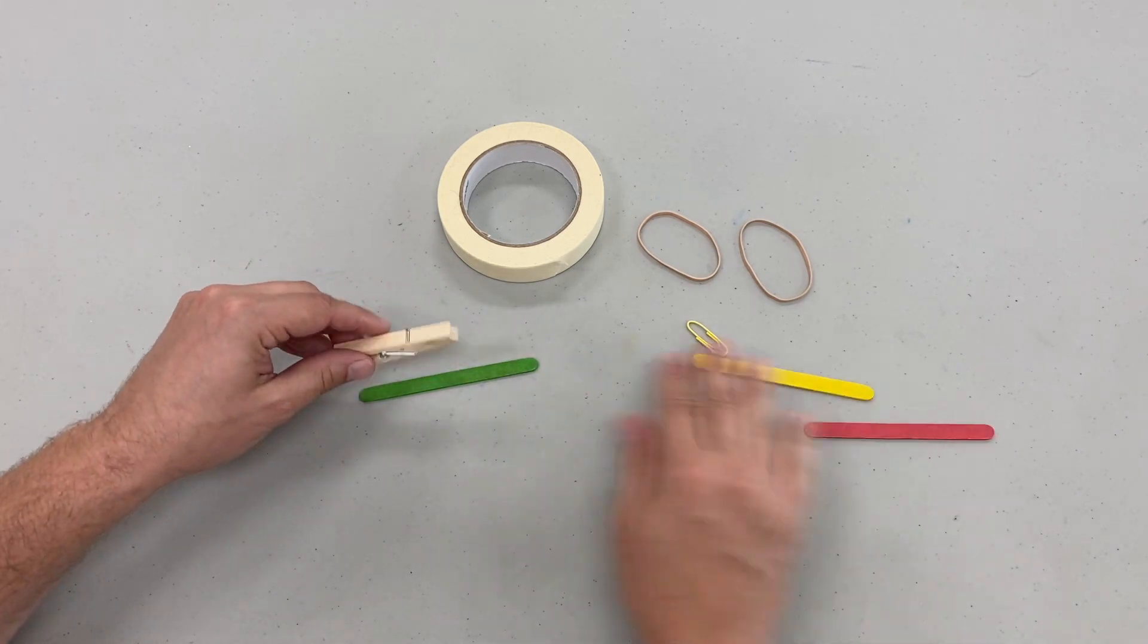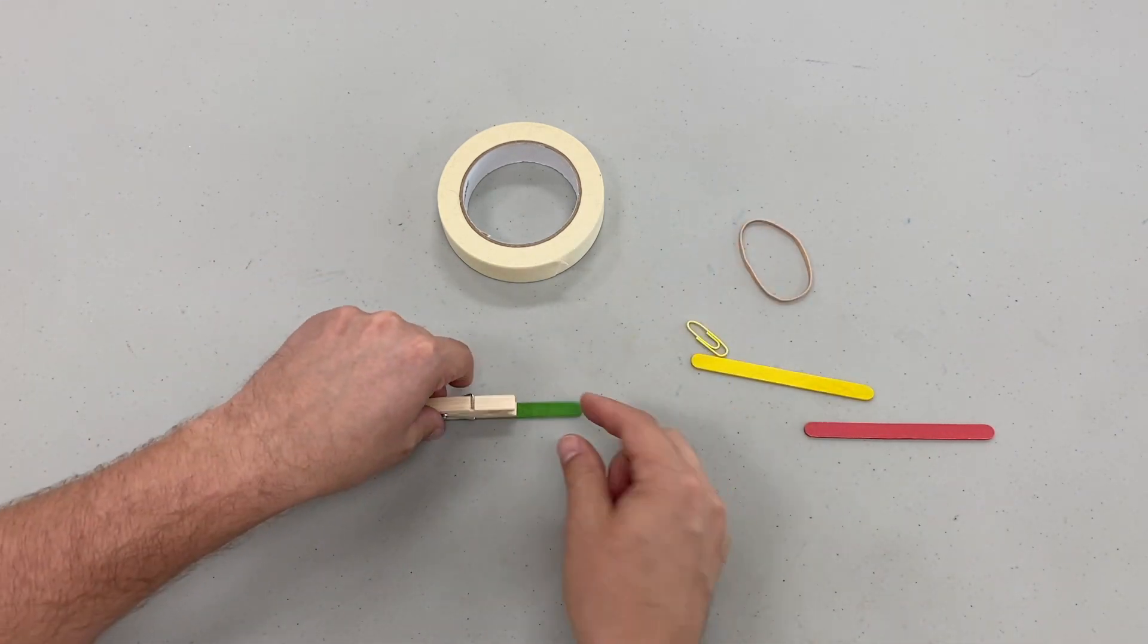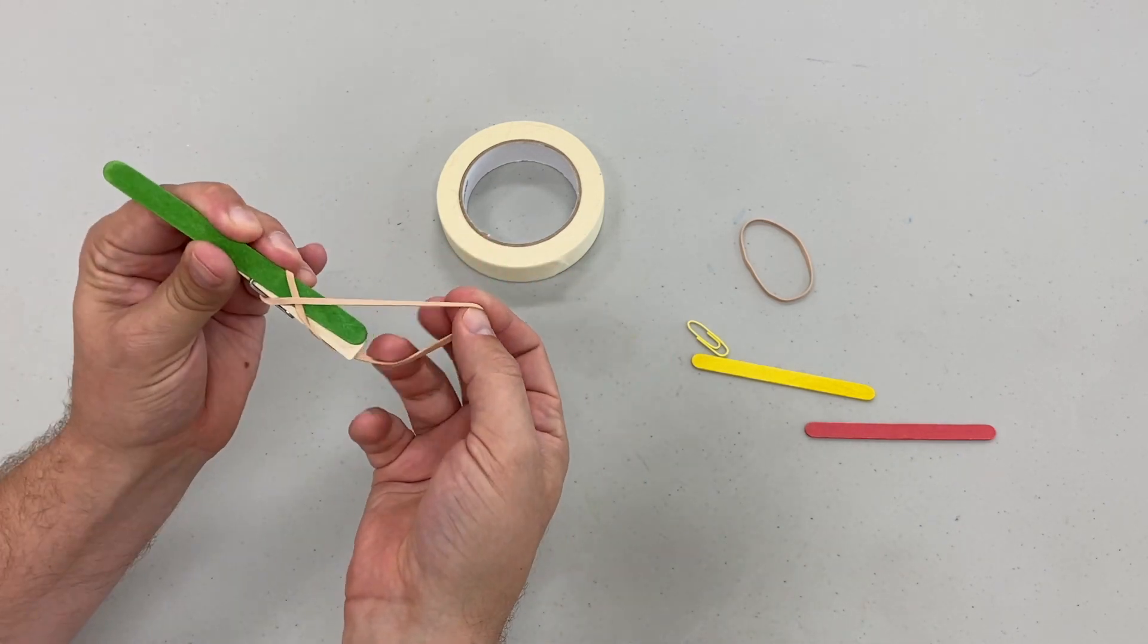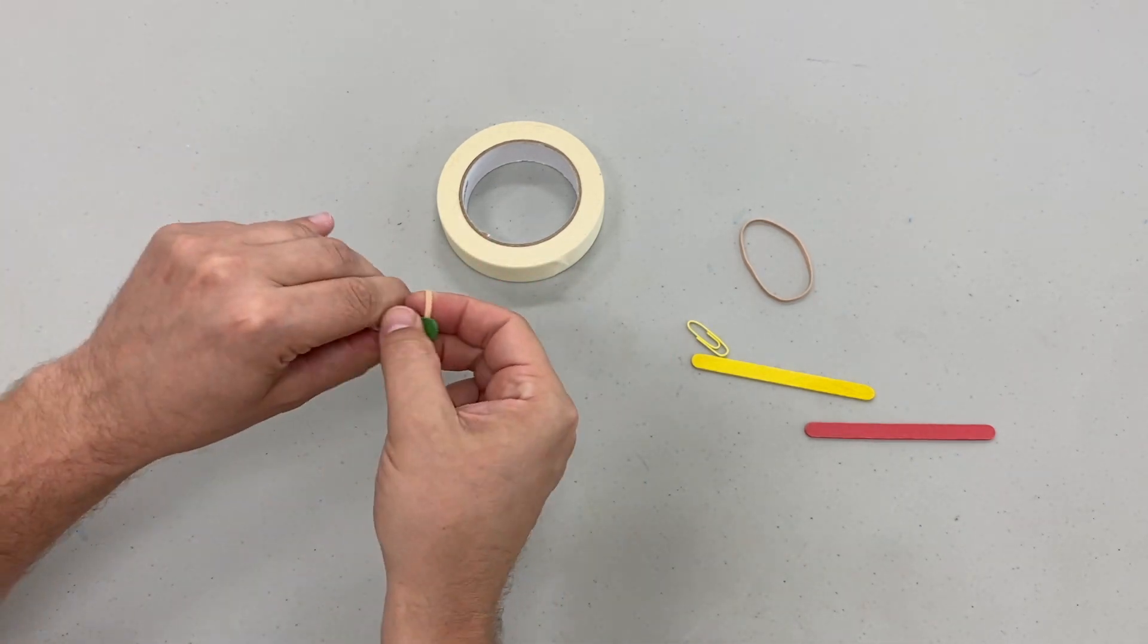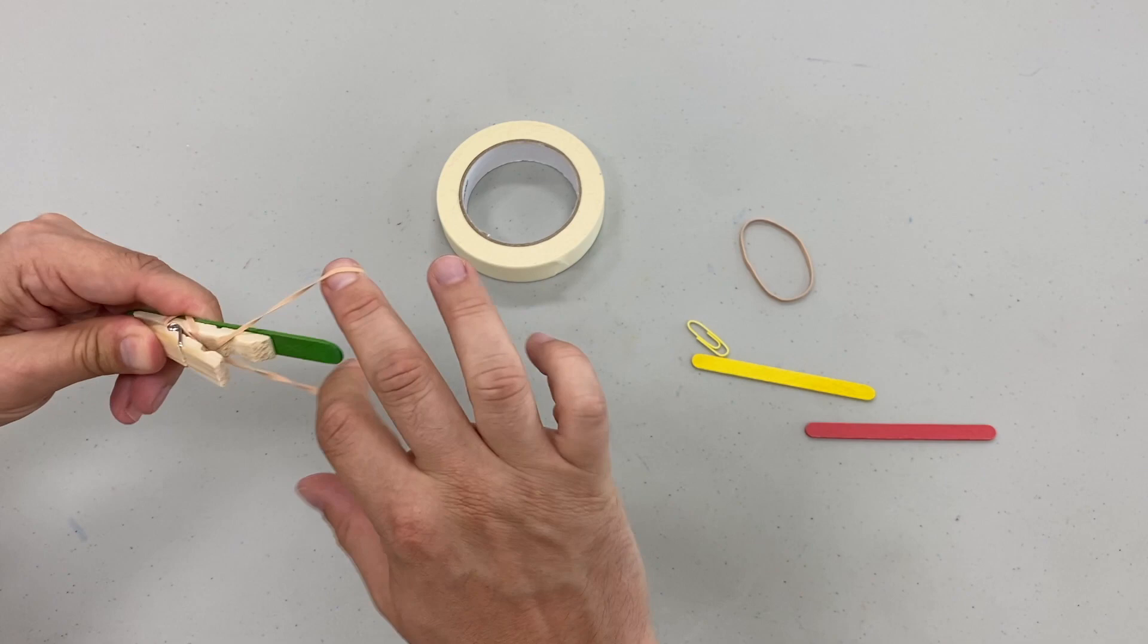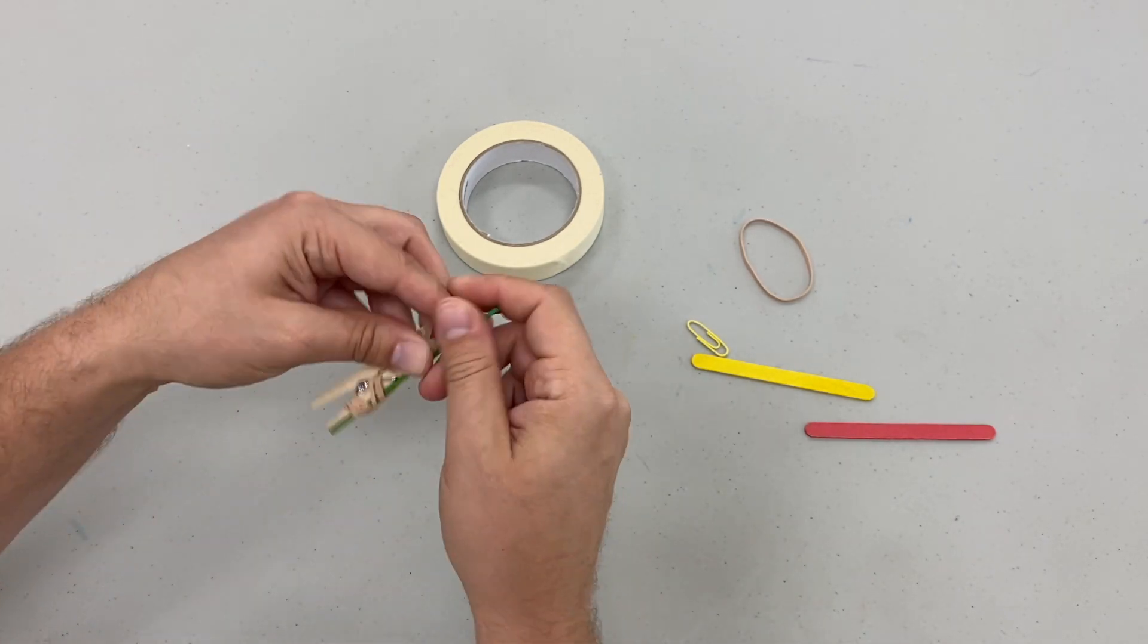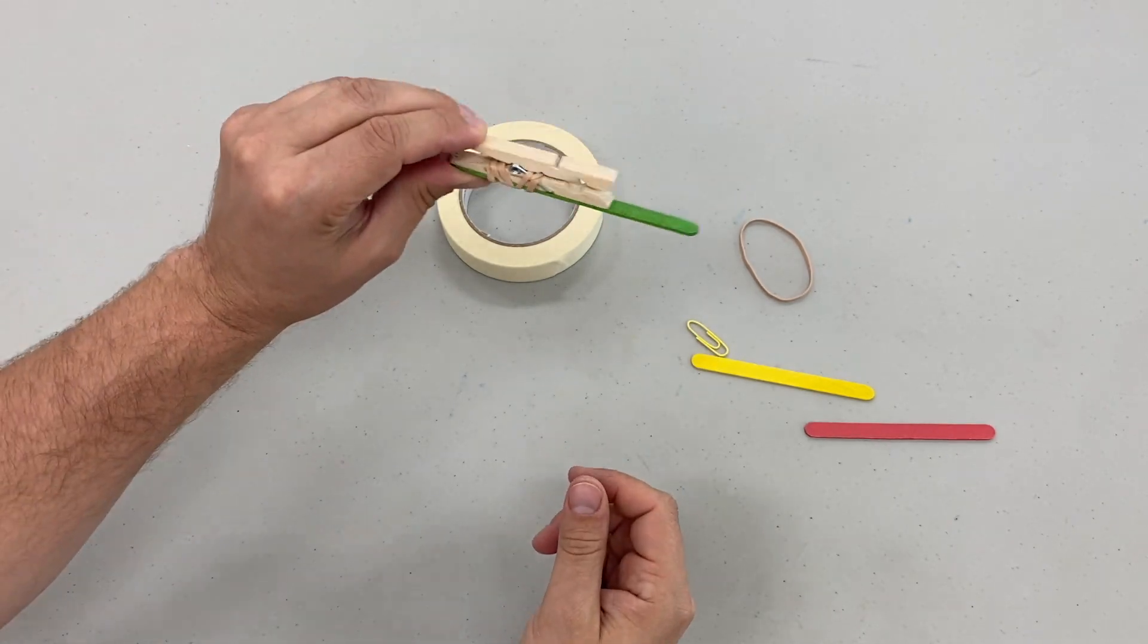Our first step is to take our clothespin and attach it to one of our craft sticks. We're going to use a rubber band to do so. Open up your clothespin and loop the rubber band through the open side first and then loop it around the tail of the clothespin. Do that a couple times on both the opening end and the tail so that it holds on to the stick perfectly.